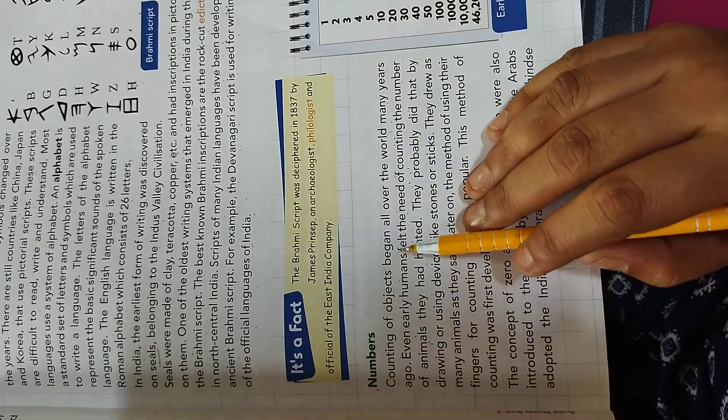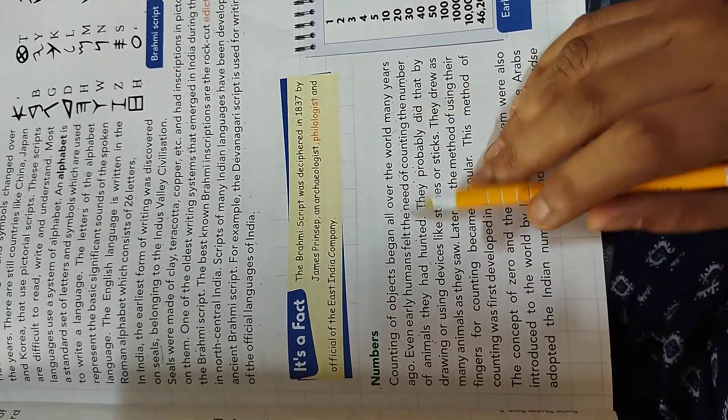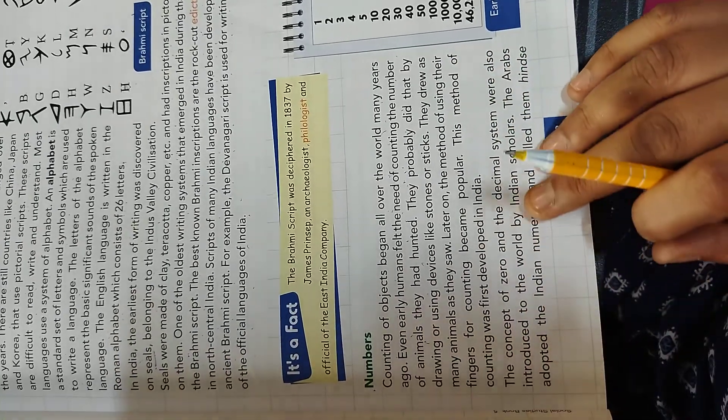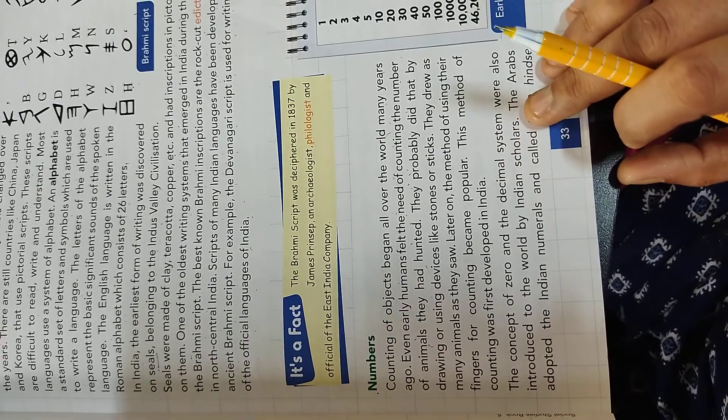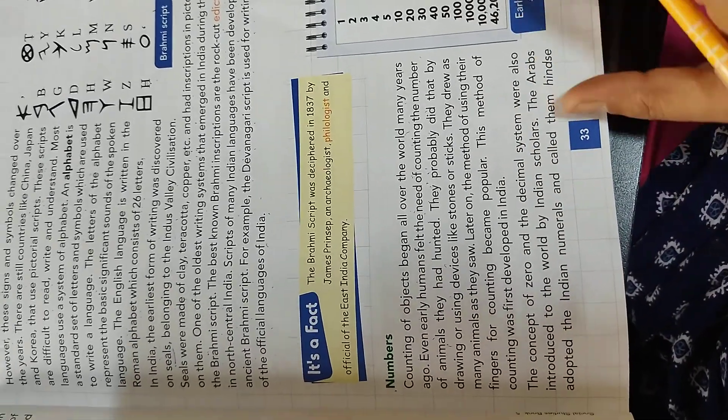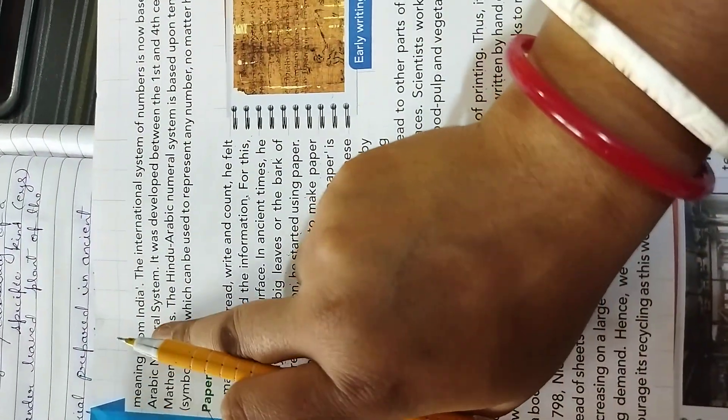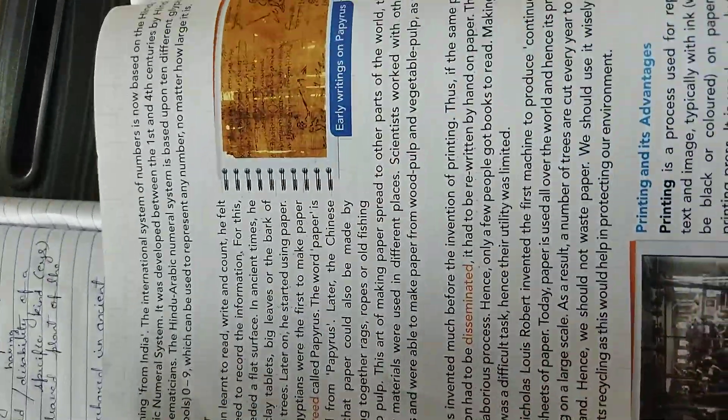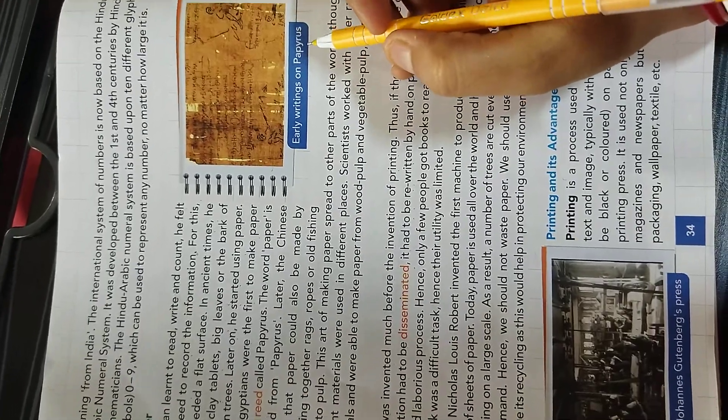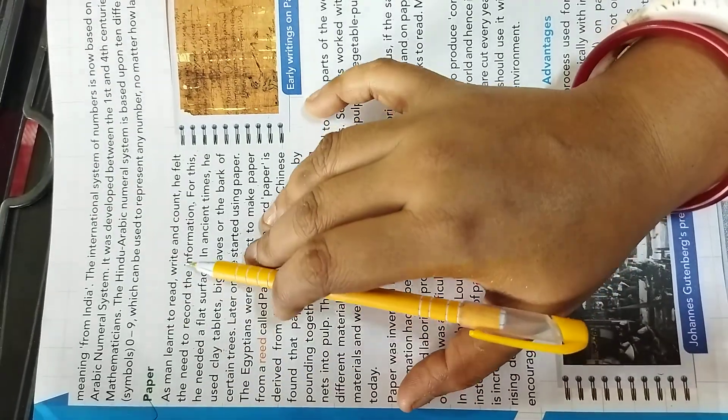Even early humans felt the need of counting the number of animals they had hunted. The concept of zero and decimal system were also introduced to the world by Indian scholars. The Arabs adopted the Indian numerals and called them Hindse, meaning from India. Let's pick the next topic that is paper. This is the picture of papyrus, early writing on papyrus.